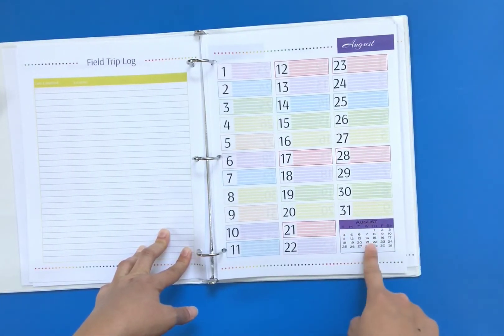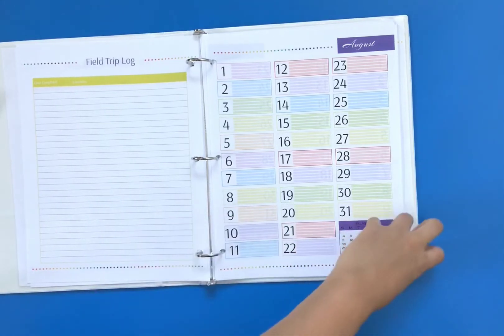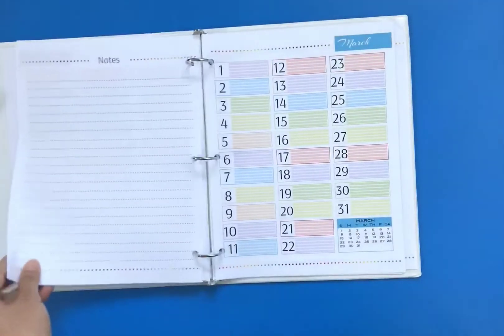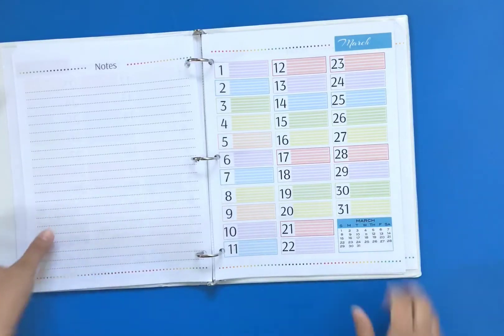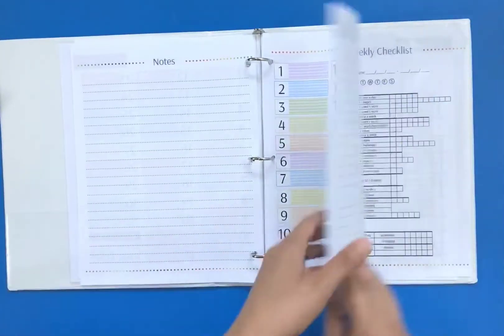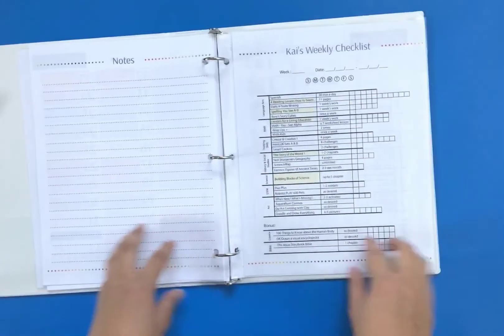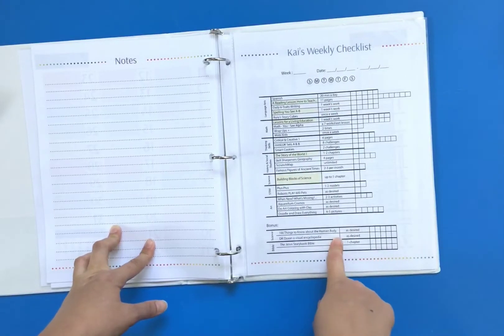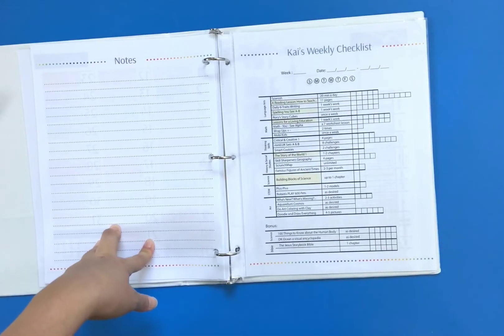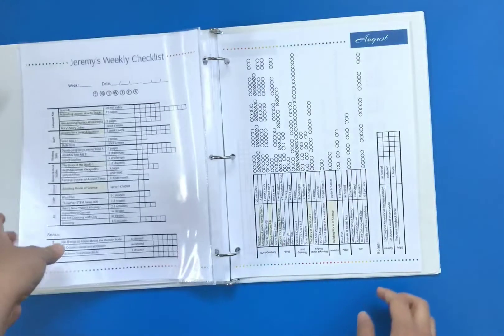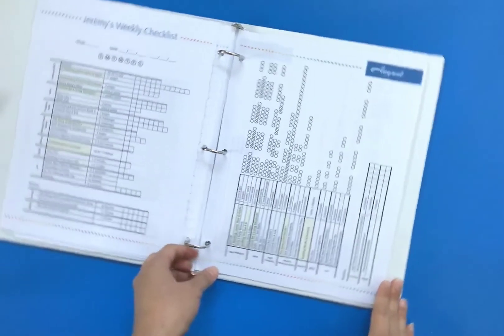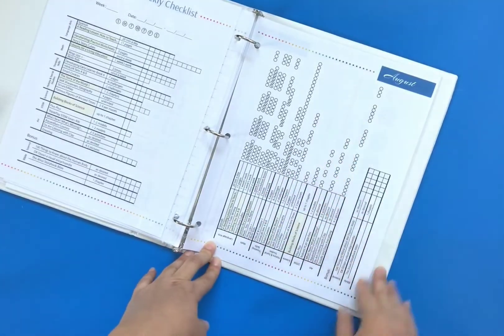There's a note page on the back. Again, we're using Timberdoodle, so they have a weekly checklist. I have one for both of my kids. Because I'm just a little freak, I actually made a whole month view of the curriculum and everything we need to do that month.